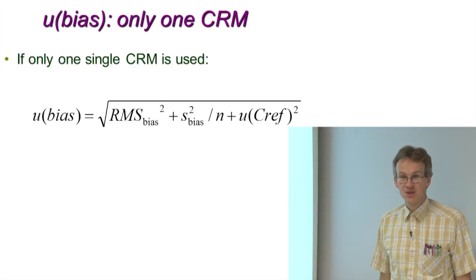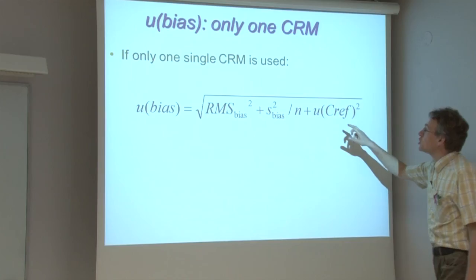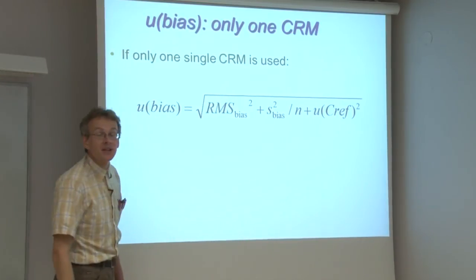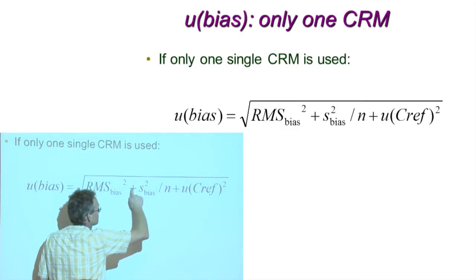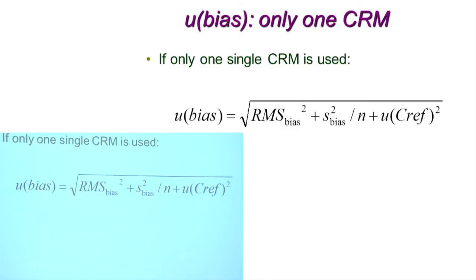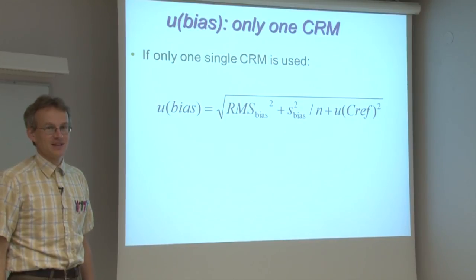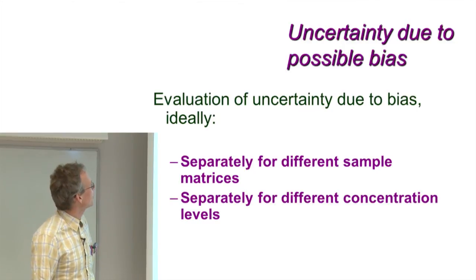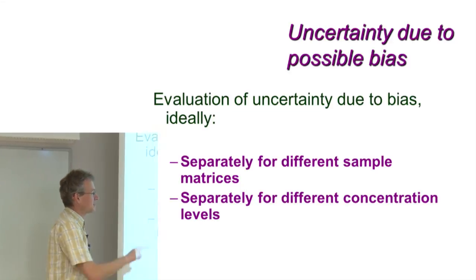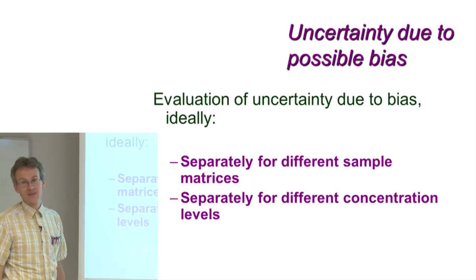If unfortunately you have only one single certified reference material for bias estimation, but you can do several bias determinations with it, then the U_bias formula changes slightly. The RMS_bias squared and UC_ref squared remain the same, but in addition you must bring in an extra term: the standard deviation of the bias values obtained divided by the square root of how many bias determinations were carried out. Such an additional term is required when only one single certified reference material is used. As with the random component U_RW, the bias should preferably be estimated separately for different matrices, and also separately for different concentration levels if very different concentrations are used.